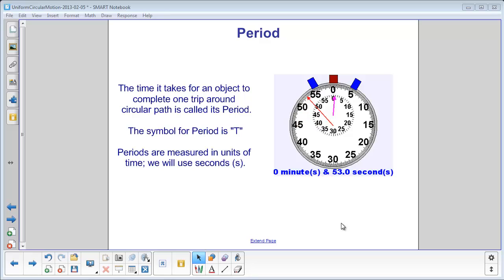Since an object in circular motion will repeat a cycle, it might be useful to know how long it takes to go once around a circle. This is what we call period, the time it takes to move one trip around a circular path.